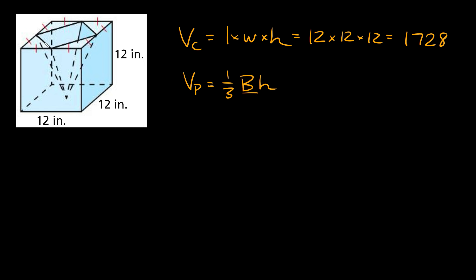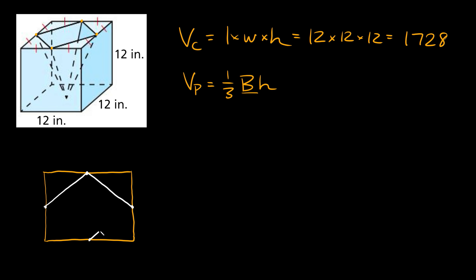The only thing we can see is that the corners of the base appear to hit the top square at the midpoints — the corner here hits this side at the midpoint, the corner over here hits this side at the midpoint, and same thing on the other two sides. So all we know is that the corners of the base hit the top square at the midpoints. Let's draw a picture to help. We draw in the square on top, and the corners hit the sides at the midpoints, connecting these four midpoints to form the base.